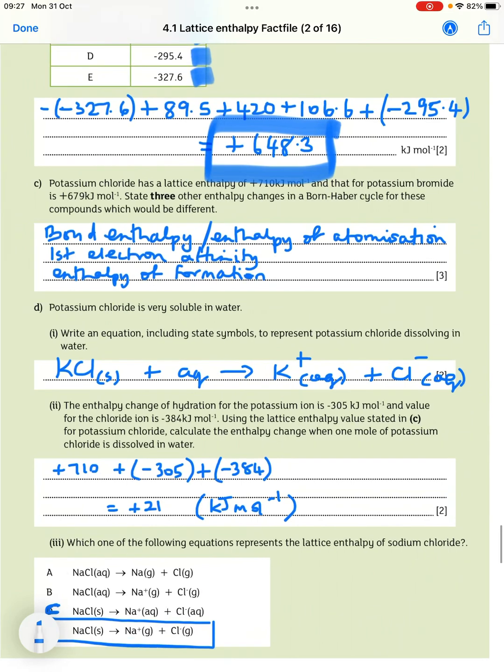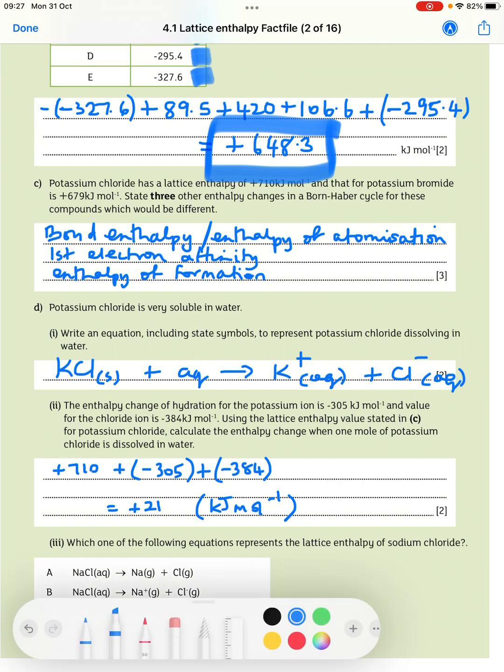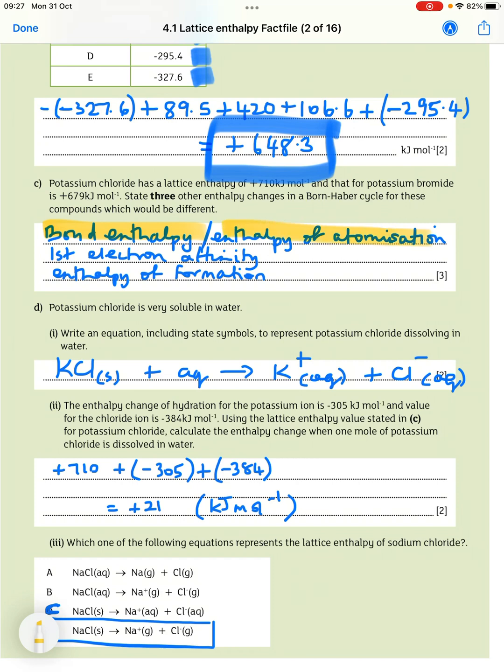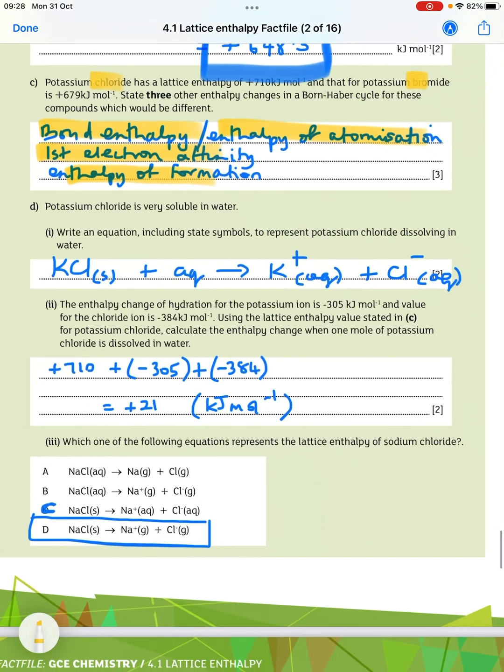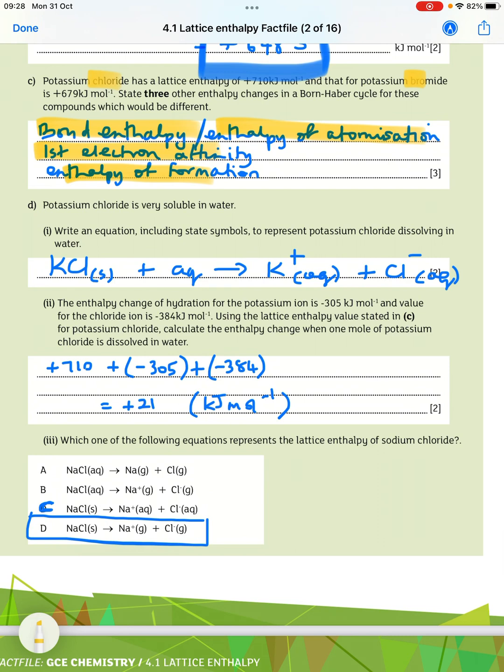Next, it asks, potassium chloride has a lattice enthalpy of plus 710 kilojoules per mole. And that for potassium bromide is plus 679. State three other enthalpy changes in the Born-Haber cycle for these compounds, which would be different. So, the first one is the bond enthalpy, or the enthalpy of atomisation is going to be different for each of the compounds. The first electron affinity is going to be different, because the first one is chloride, the second one is bromide. And then the enthalpy of formation will be different for the two as well.